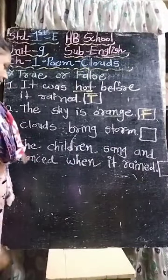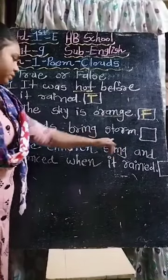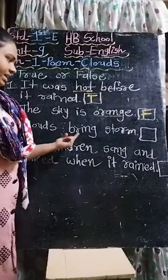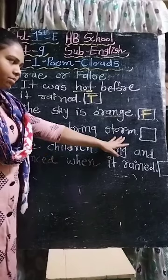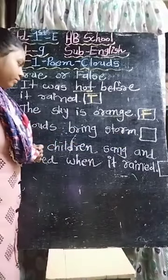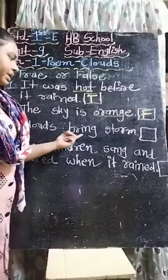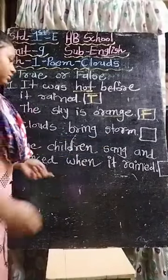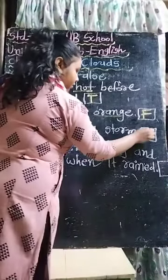Now third one: 'Clouds bring storm.' Clouds bring - यानि लाना. क्या लाते हैं? Storm लाते हैं. Is it true or false? False, because clouds bring rain. Answer is false.